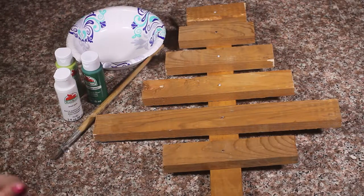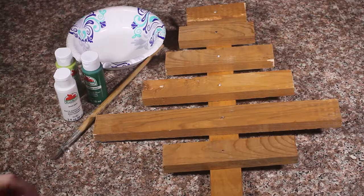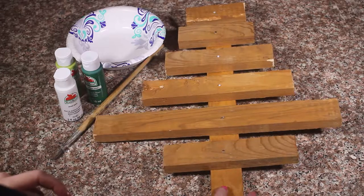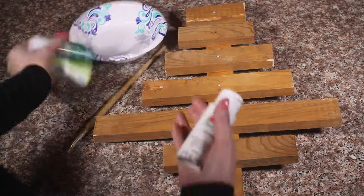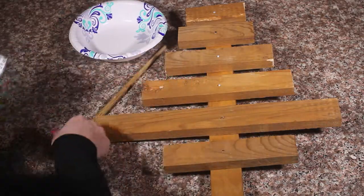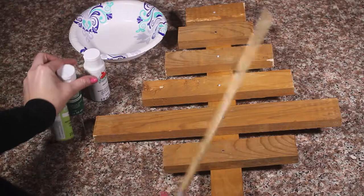So in order to create this ombre tree we are going to need some scrap wood, some nails, green and white paint, a paintbrush, and a mixing bowl.